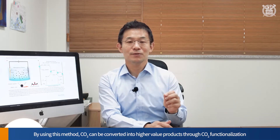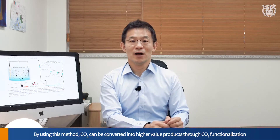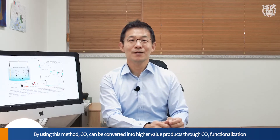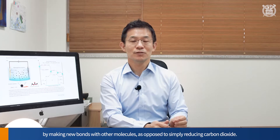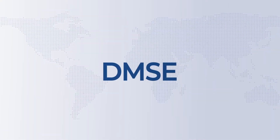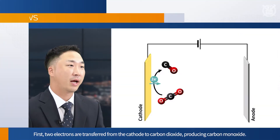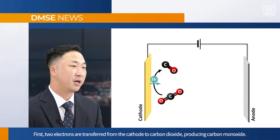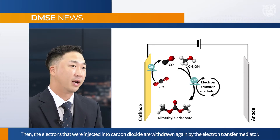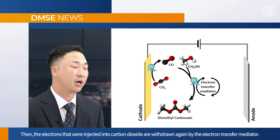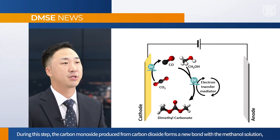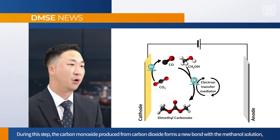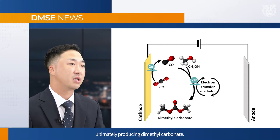By using this method, CO2 can be converted into higher value products through CO2 functionalization by making new bonds with other molecules, as opposed to simply reducing carbon dioxide. Specifically, the system developed by the research team works as follows: first, two electrons are transferred from the cathode to carbon dioxide, producing carbon monoxide. Then, the electrons that were injected into carbon dioxide are withdrawn again by the electron transfer mediator. During this step, the carbon monoxide produced from carbon dioxide forms a new bond with the methanol solution, ultimately producing dimethyl carbonate.